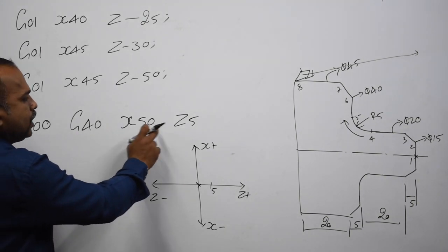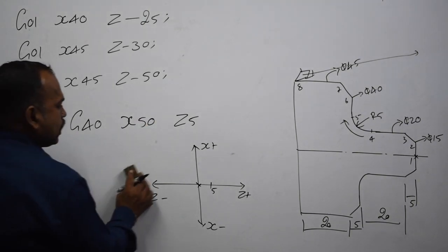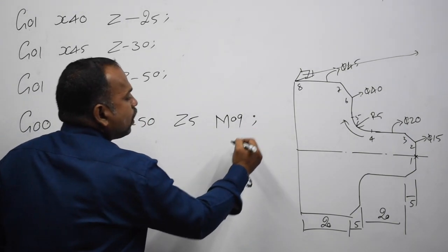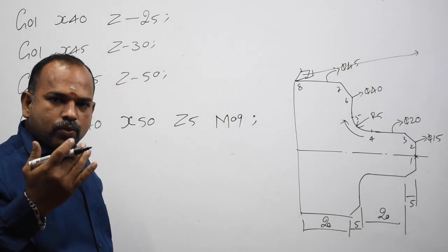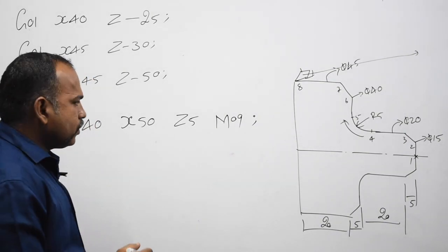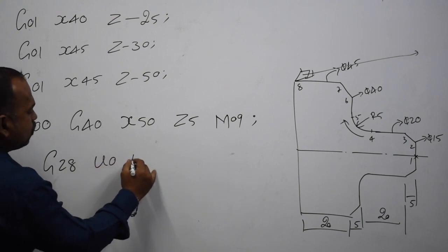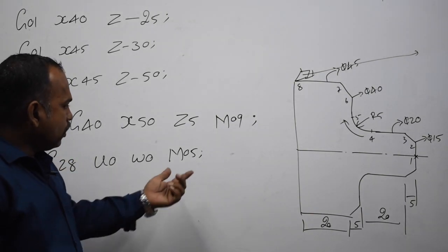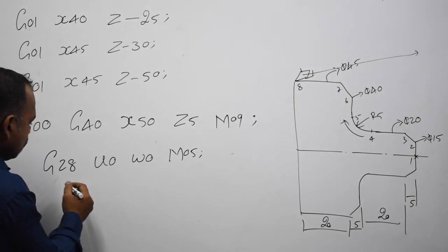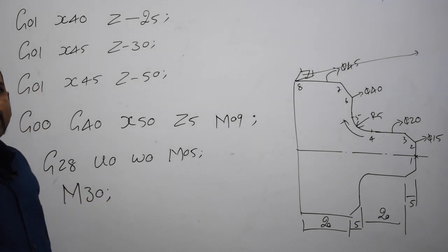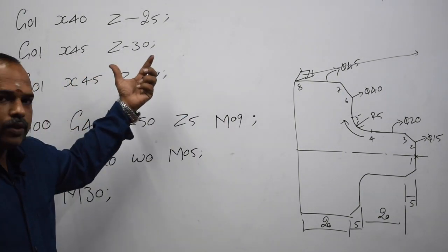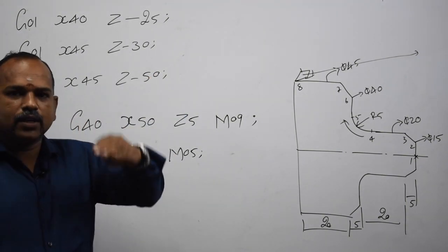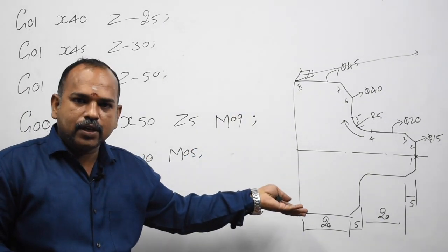G00, X50, Z-50. Then M09 — coolant off. M08 was coolant on, M09 is coolant off. Then G28, U0, W0, M05 — tool return to home position.